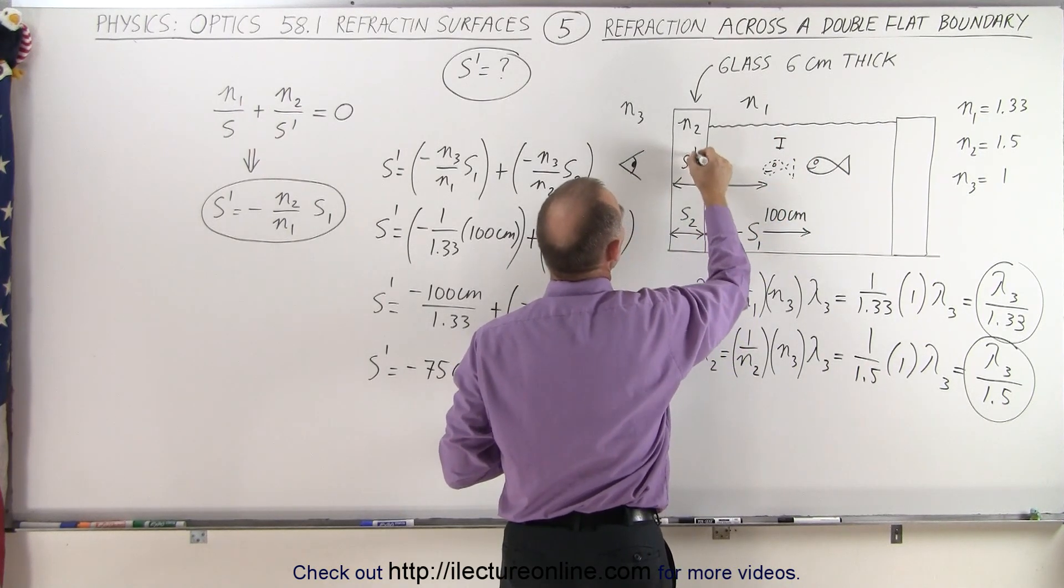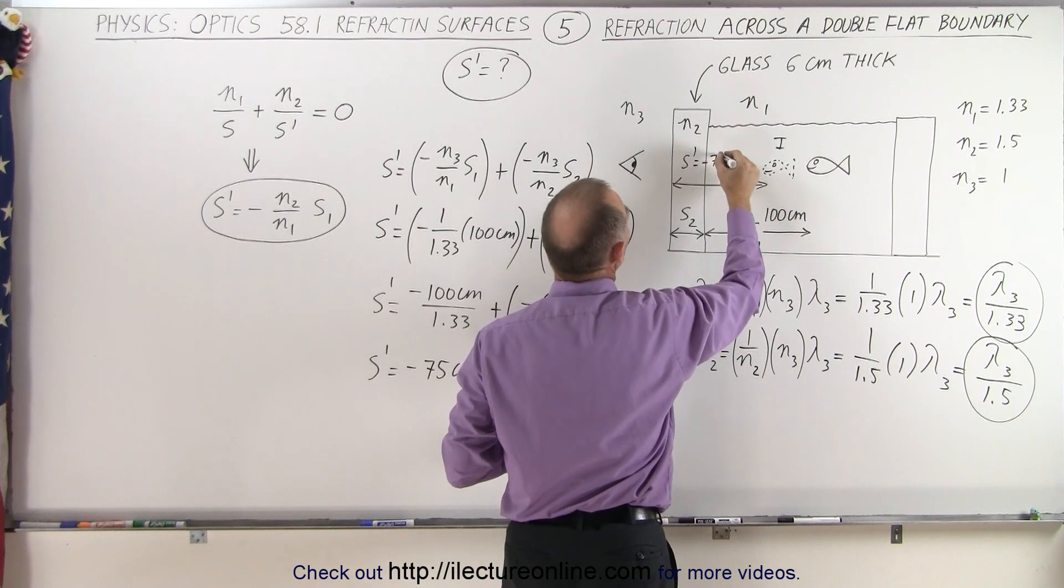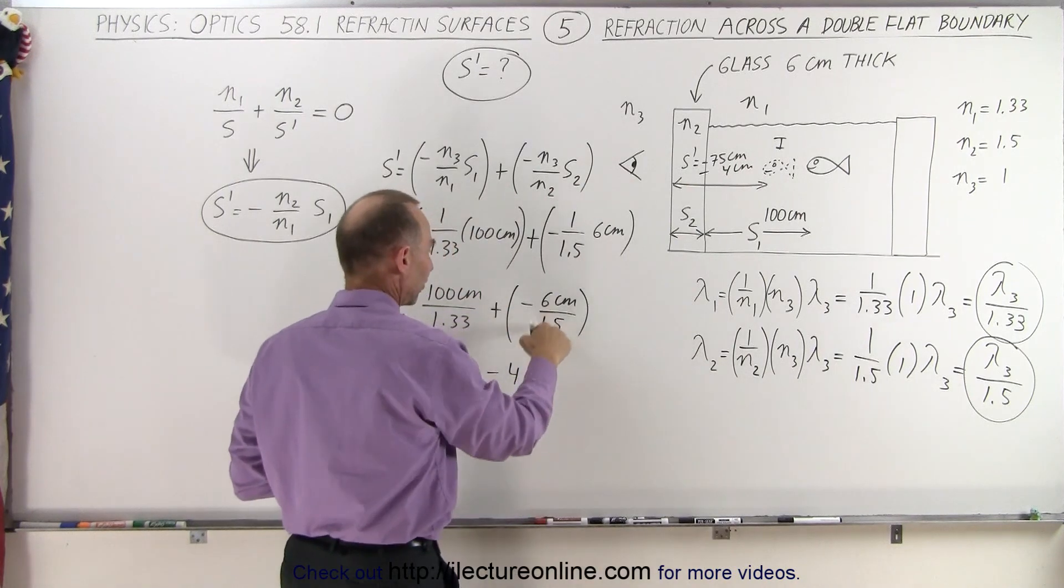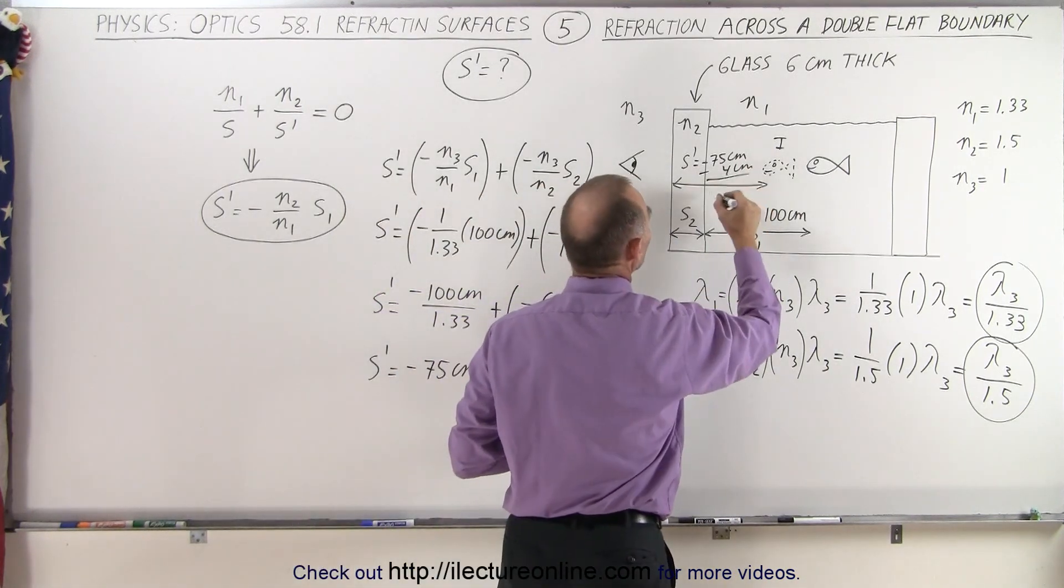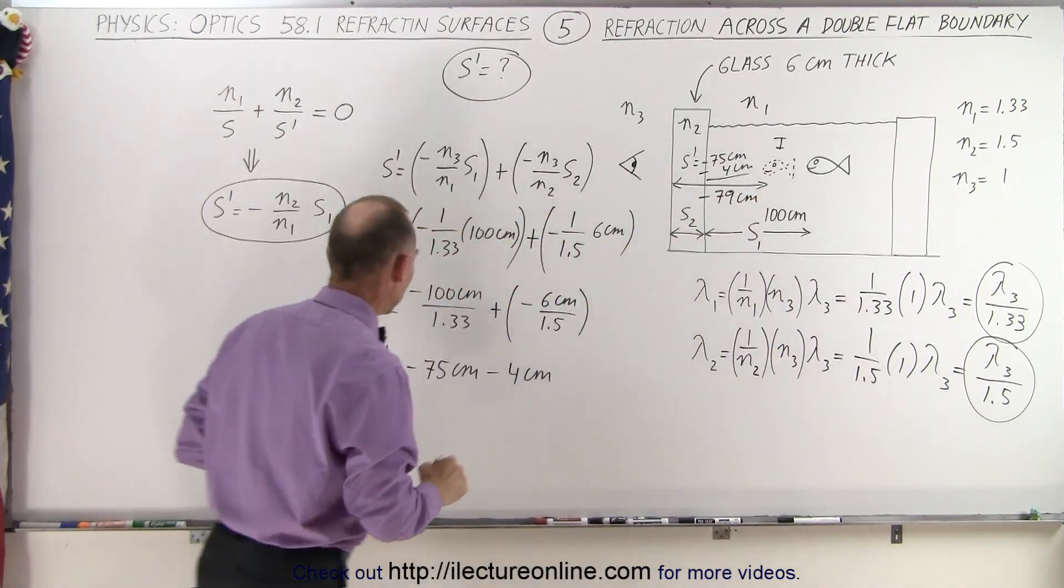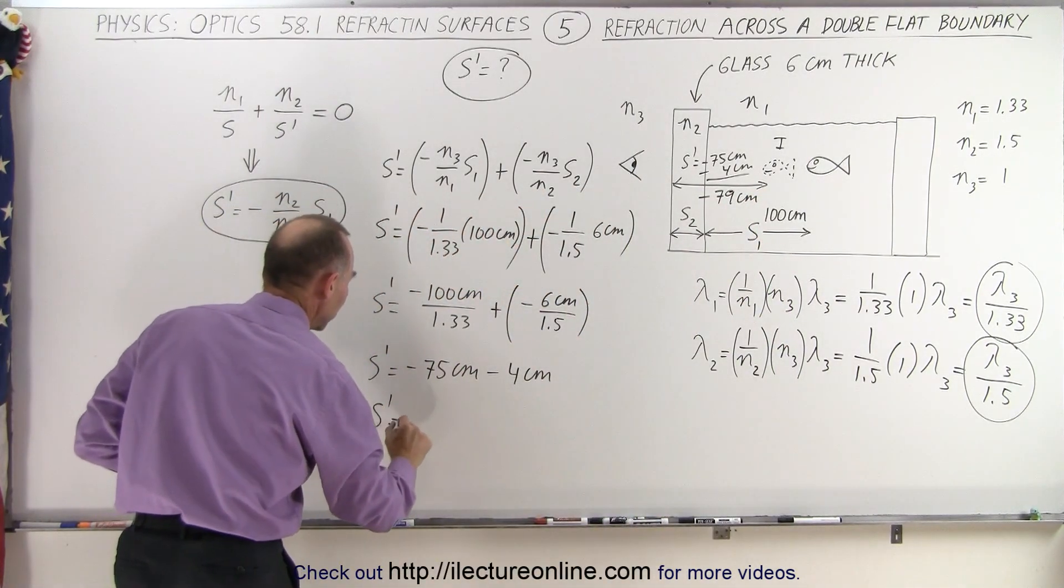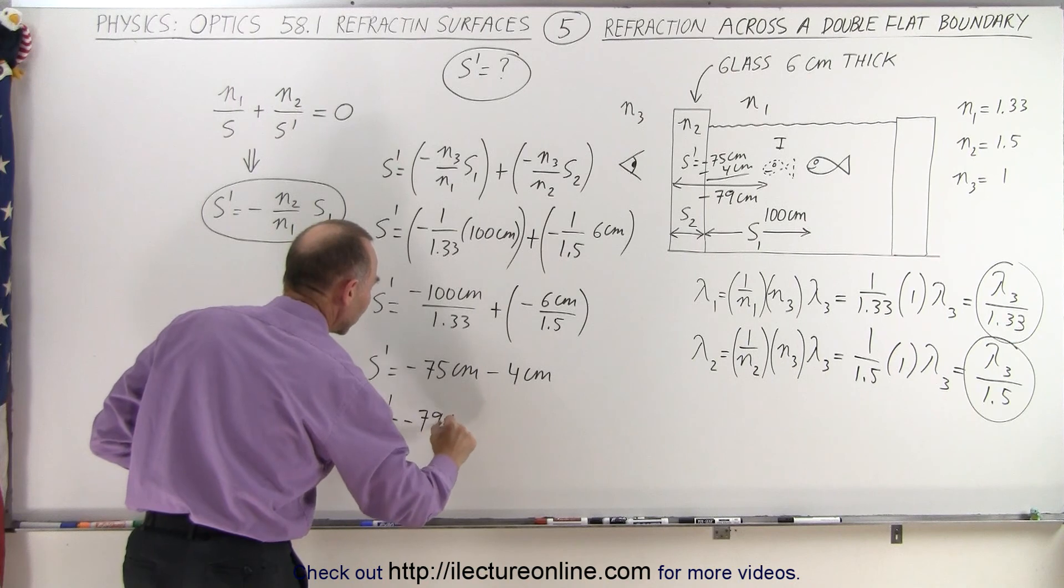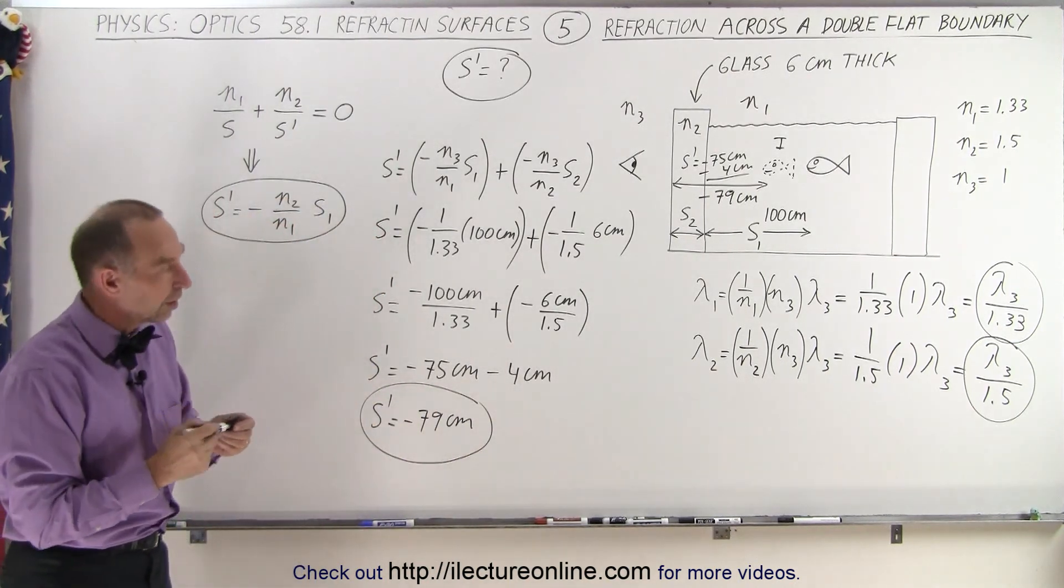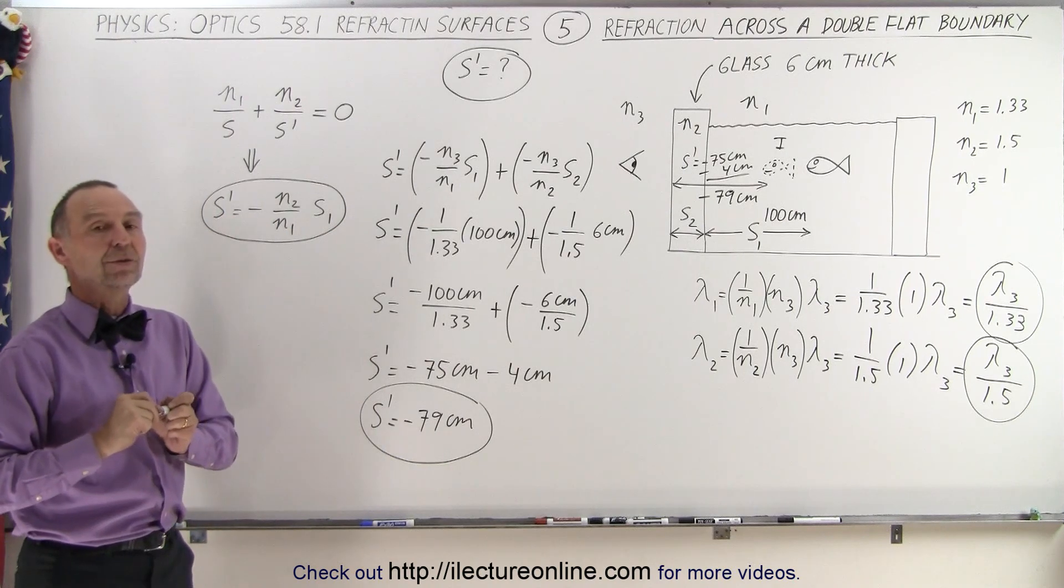S prime is going to be equal to minus 75 centimeters minus 4 centimeters, because that's 6 divided by 1.5. Add it together, that would be minus 79 centimeters total. And notice that S prime is indeed a minus 79 centimeters. And so you have to take care of both regions across both of the boundaries.